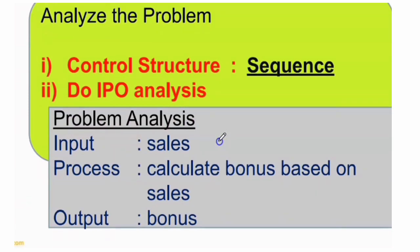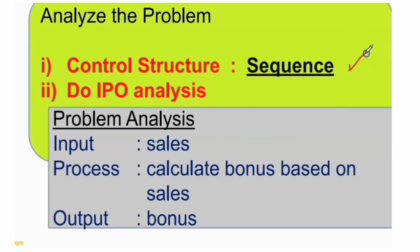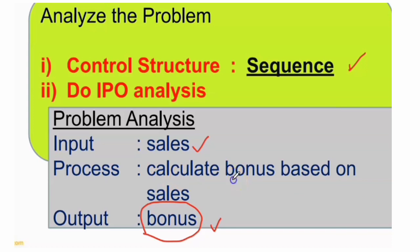First step: analyze the problem using IPO analysis with sequence control structure. Based on the problem statement, the output is bonus. To get the bonus, the input is of course sales. For the process, calculate bonus based on sales — bonus is derived from the output based on the sales input. Write it in a standardized format.